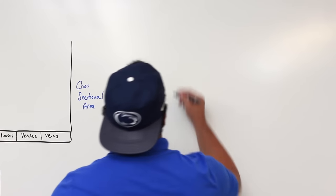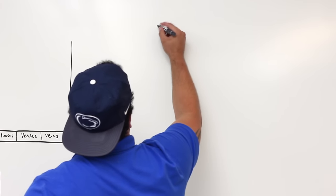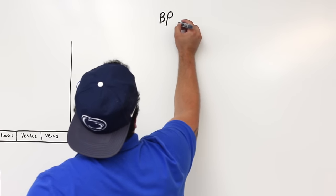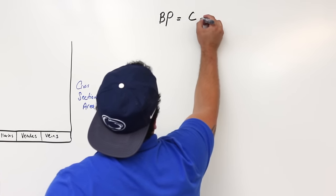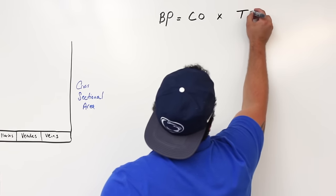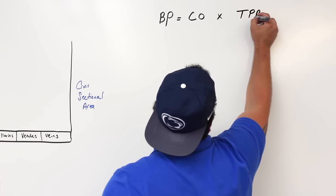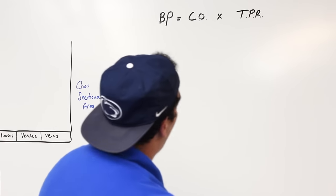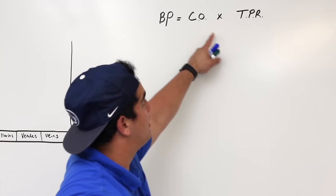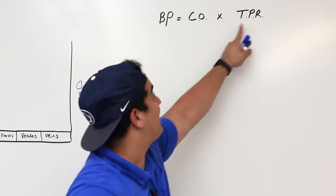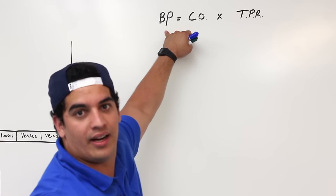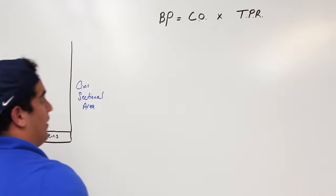How can we define blood pressure in general terms? Blood pressure is equal to your cardiac output multiplied by your total peripheral resistance. We need to decipher what cardiac output is and what total peripheral resistance is, because once we do, we can really understand exactly how our blood pressure is fluctuating.